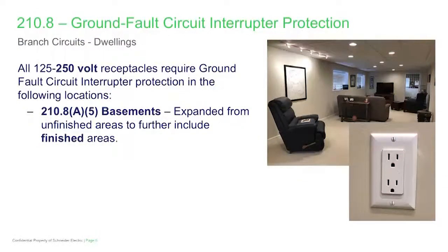As we look at 210.8(A) for residential dwellings, the hazard is the same whether it's a 125-volt receptacle or a 250-volt receptacle. The code panel recognized the areas where the hazard is the same and why there doesn't necessarily need to be a limitation on voltage. Basements have traditionally focused on unfinished areas, and now include finished basements — the same hazard exists where the potential for moisture or water on the floor creates a damp or wet location. This expansion will make it easier for code enforcement and the installer. Now, if it's a 125 or 250-volt receptacle in a basement, period — it'll have GFCI protection.